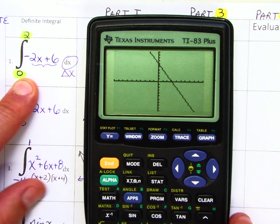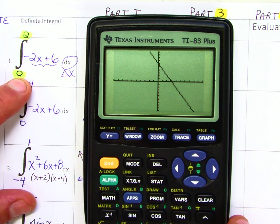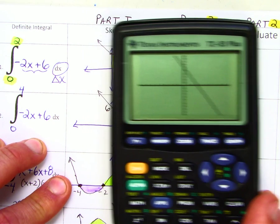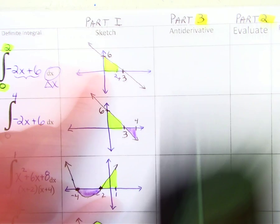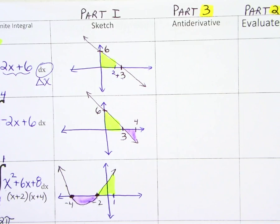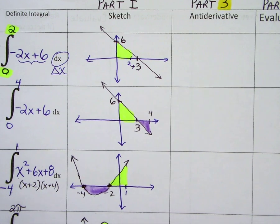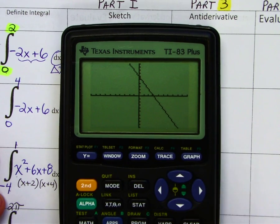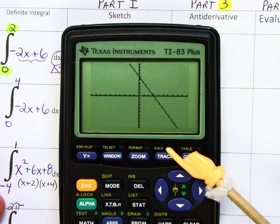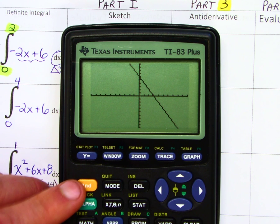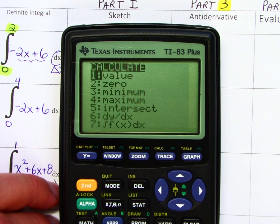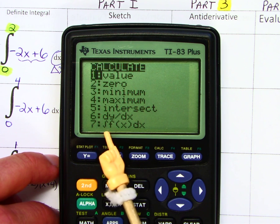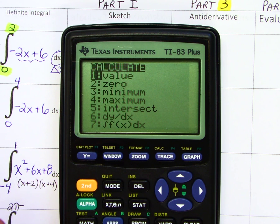Now I want to evaluate this integral from 0 to 2. So I want to find out the area of that yellow thing there. And so here we go. So here's the graph. Above the trace button is a little mode called calc. So it's yellow, so I have to hit the second button, calc. And item number 7 here, there's a little sneaky snake there, the integral sign. So hit 7.